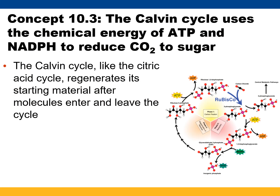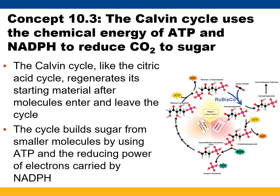We're going to finish off with a few slides talking about the Calvin cycle. Like the citric acid cycle, it's cyclic in nature — but instead of stripping carbons off, we're adding carbons on. We are reducing rather than oxidizing. We are making a sugar — a very simple three-carbon sugar called G3P (glyceraldehyde-3-phosphate).